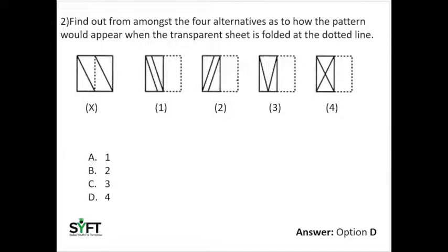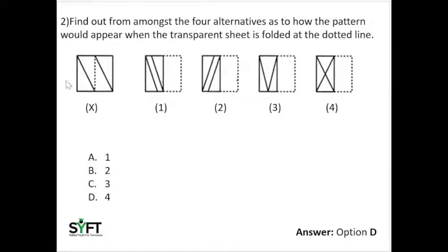In the next question: find out from amongst the four alternatives how the pattern would appear when the transparent sheet is folded at the dotted line. When we fold along this axis, the line on the unfolded part would remain fully the same as in figure X. We just have to check how the other part would appear after folding. In option number one, when we fold along it, this line would be at the opposite inclination of this line.